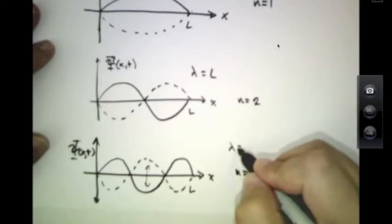This would be the case of lambda is 2L over 3, and it's still very close. It's just a standing wave.